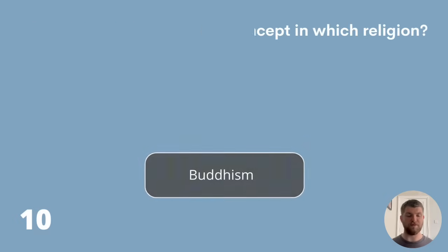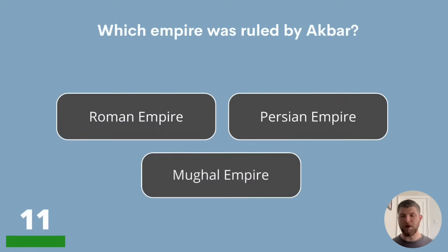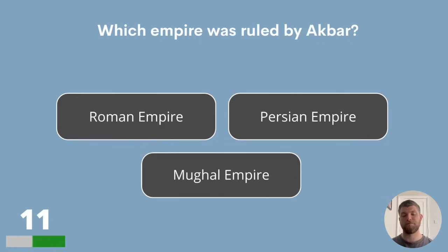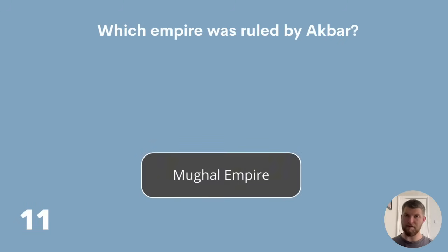Question 11 — the first question in our History section. Which empire was ruled by Akbar? Roman Empire, Persian Empire or Mughal Empire? The answer is the Mughal Empire.